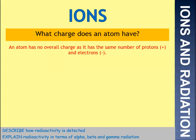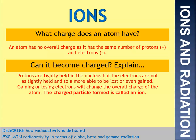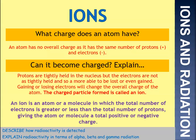What charge does an atom have? Atoms generally have no overall charge — the same number of protons and electrons. Protons are held really tightly in the nucleus, but electrons are not as tightly held, so they're more able to be lost or even gained. Gaining or losing electrons changes the overall charge of the atom. When we form a charged particle, we refer to it as an ion rather than an atom. An ion is an atom or molecule in which the total number of electrons is greater or less than the total number of protons, giving it a total positive or negative charge.